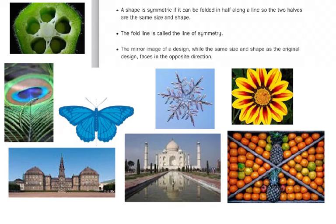We're going to talk about symmetry today. A shape is symmetric if it can be folded in half along a line so that two halves are the same size and shape. The fold line is called the line of symmetry. The mirror image of a design, while the same size and shape as the original design, faces in the opposite direction. So if you just look at nature or even in buildings around us, look at all of the different things that show symmetry.